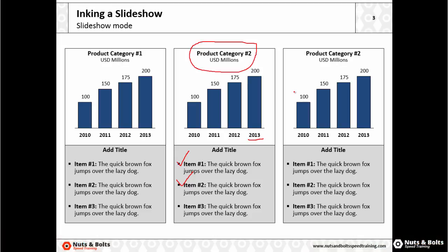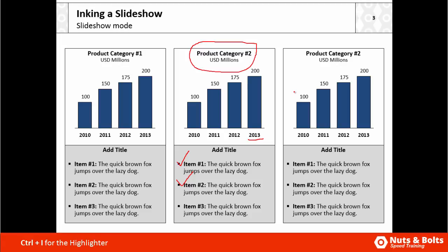In PowerPoint 2013, we have a new highlighting or inking shortcut, which is the highlighter — Control-I on your keyboard. Hit Control-I and the mouse cursor becomes a highlighter, which allows you to highlight different things in your presentation.